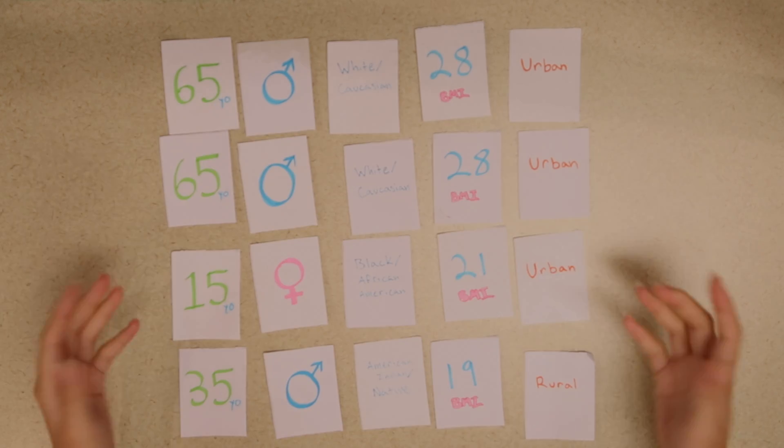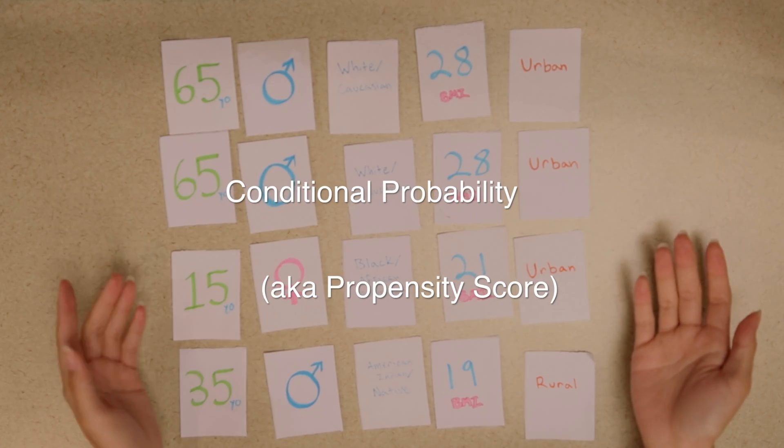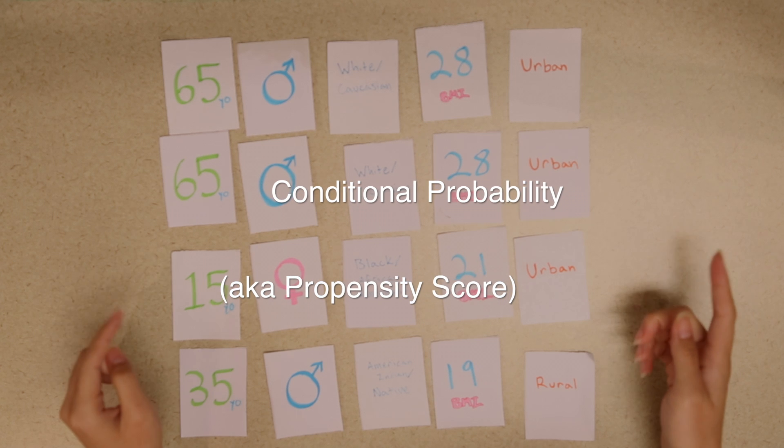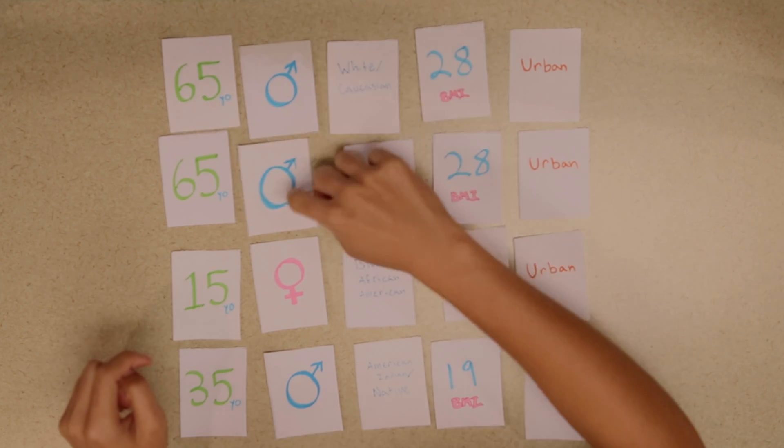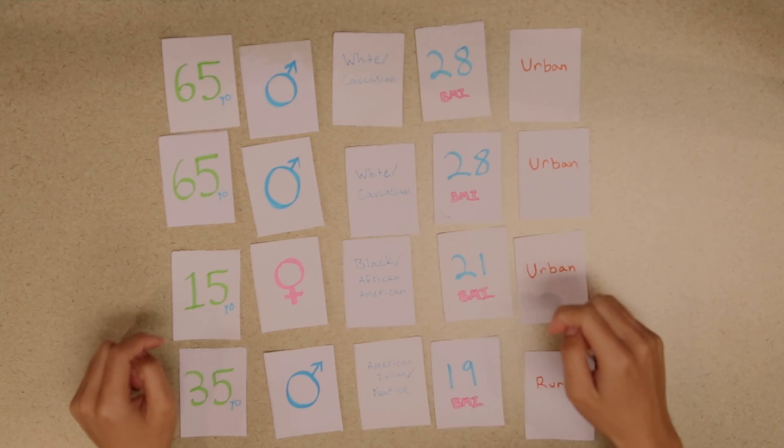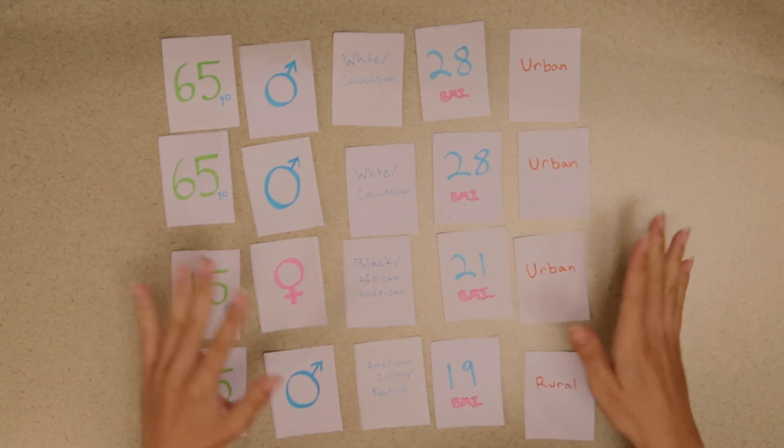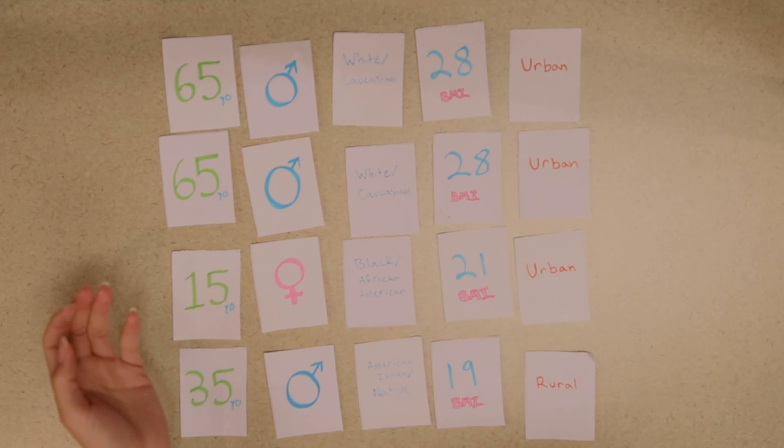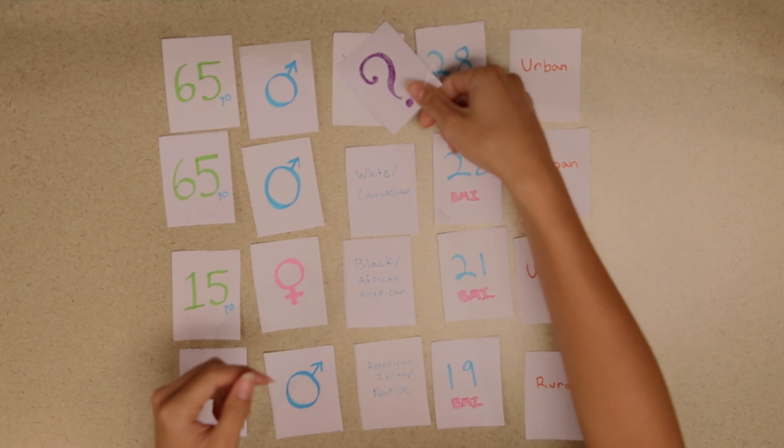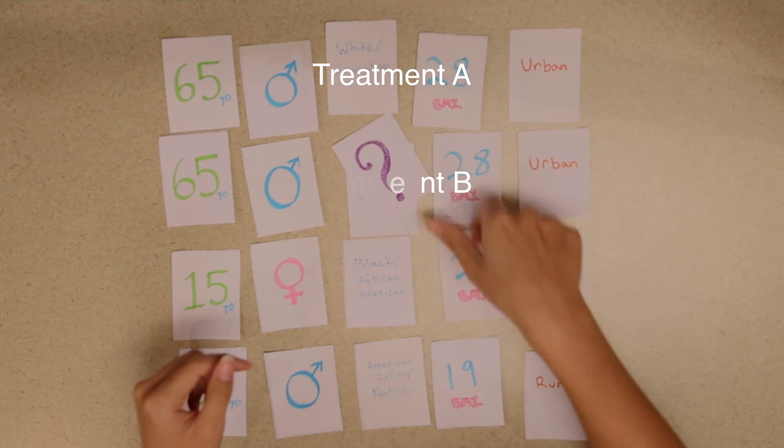So, by doing this you increase the conditional probability or in other words the propensity score. That means that between two people you make sure that both of them have an equal chance of getting either treatment. It's as if you randomly gave one patient treatment A and another patient treatment B.